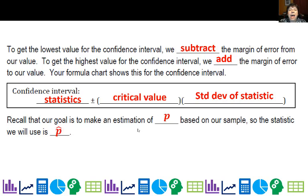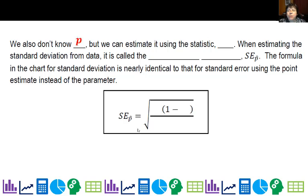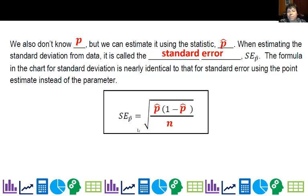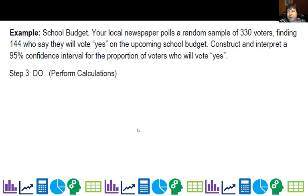Our goal is to estimate the proportion — the parameter — based on our sample, so we're going to use p-hat, which is our statistic from our sample. We also don't know p, which is what we're trying to estimate with p-hat. When estimating the standard deviation based on the sample, we call it standard error. The formula for standard error is the square root of p-hat times (1 minus p-hat) divided by n.